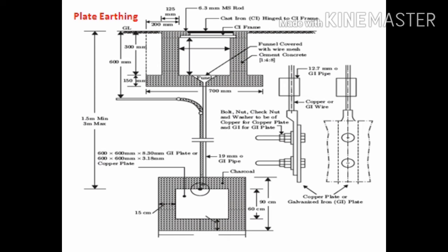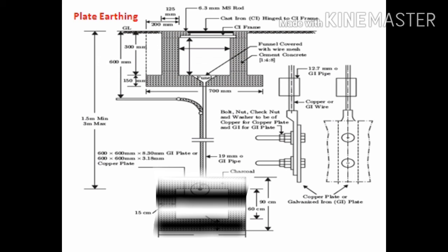Now we will take plate earthing. In this method of earthing, a GI plate of dimension 600 mm by 600 mm by 8.30 mm or a copper plate of 600 mm by 600 mm by 3.18 mm is placed inside a pit at a depth of 1.485 meter from ground level. The dimension of the pit in which copper plate or GI plate is placed is 900 mm by 900 mm by 900 mm. The copper plate or GI plate is placed in this pit vertically and around this plate charcoal and salt layers are laid.